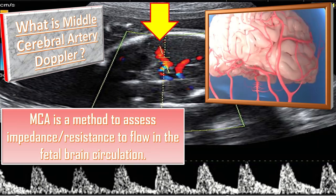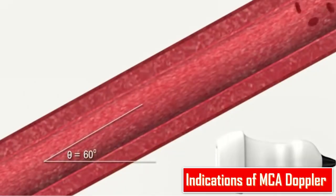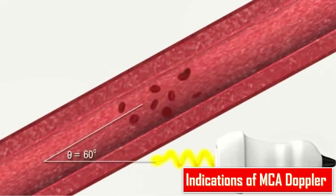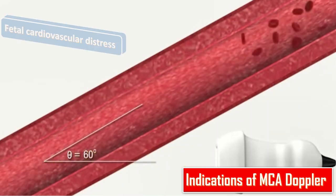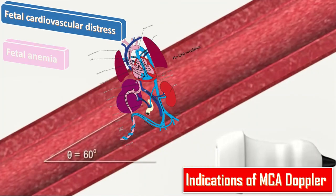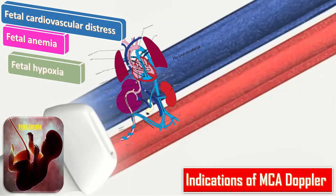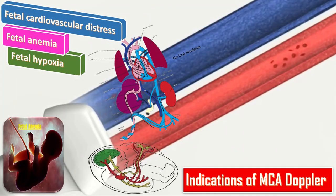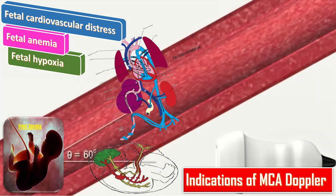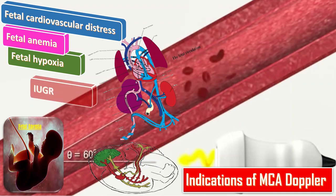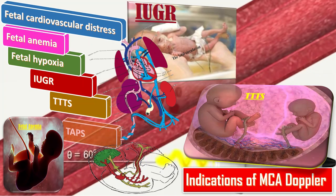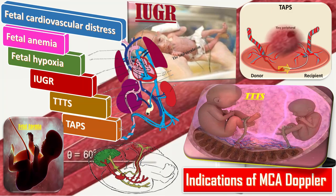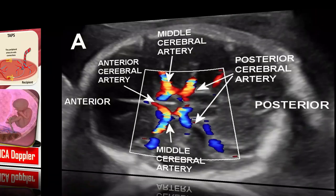What are the indications of MCA Doppler? Fetal Middle Cerebral Artery Doppler assessment is an important part of assessing fetal cardiovascular distress, fetal anemia, and fetal hypoxia. It is a very important adjunct to umbilical artery Doppler assessment and is also used in the additional workup of intrauterine growth restriction, TTTS, and TAPS.